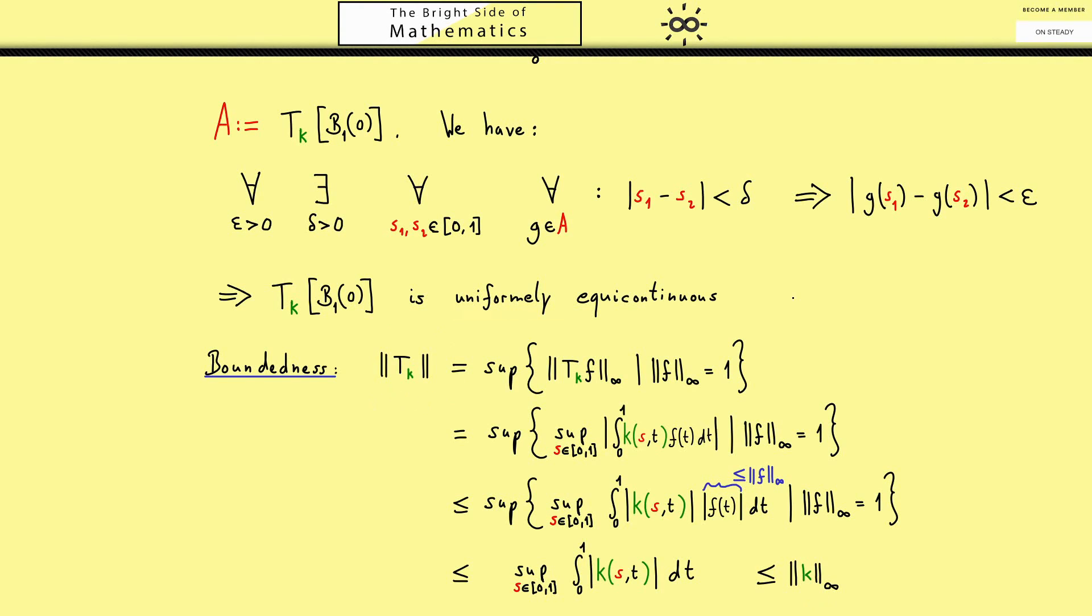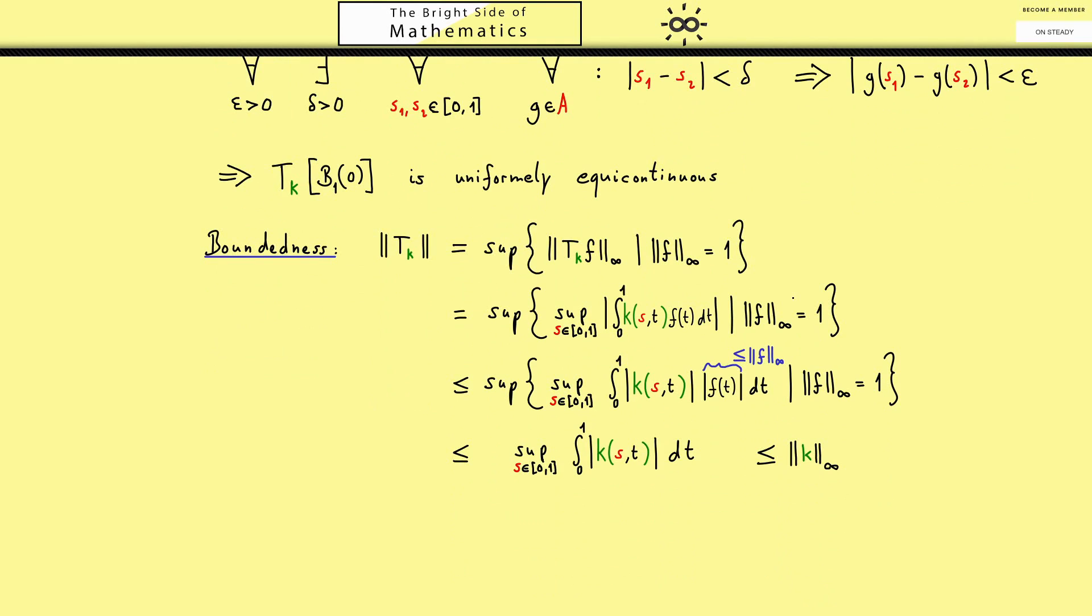And now finally comes our conclusion: we can apply Azela-Ascoli. This set, the image of the unit ball, is uniformly equicontinuous and bounded. Therefore both things also hold for the closure of the set, and by Azela-Ascoli we now have a compact set. By our definition we also know T_k, the integral operator, is a compact operator.